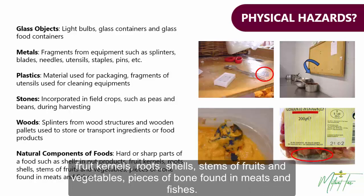Natural components of food — hard or sharp parts of a food such as shells in nut products, fruit kernels, roots, shells, stems of fruits and vegetables, and pieces of bone found in meats and fish.